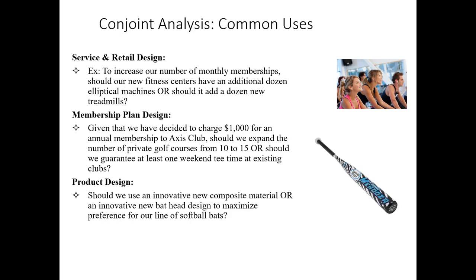Product design is perhaps the most common application of conjoint analysis. Should we use an innovative new composite material to build our softball bat, or should we focus on an innovative new bat head design — the shaping of the head — to maximize people's preference for our line of softball bats? Again, we're directing our attention to a particular feature at a particular level, probably at the same price. This is a common use of conjoint.